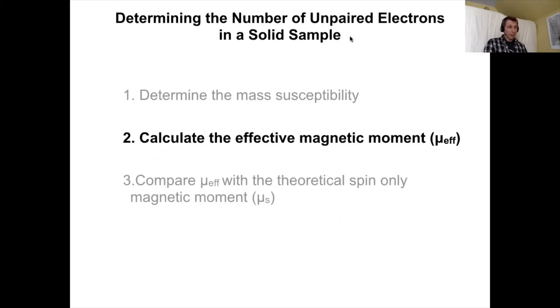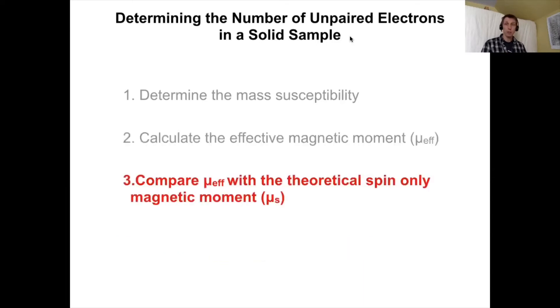Once we have the data what we have to be able to do is calculate the effective magnetic moment. That's taking the raw data, that reading and that other data, calculating the mass susceptibility then the molar susceptibility and then ultimately the effective magnetic moment. I put together a short video on Canvas about how to go through these calculations. For now we'll jump to once you get your answer and you know what the effective magnetic moment is, how can we compare that to the theoretical spin-only magnetic moment to determine how many electrons we have.